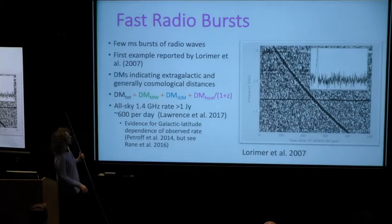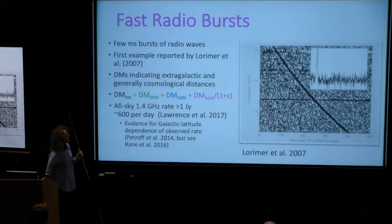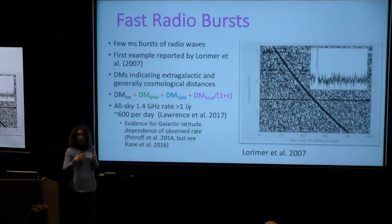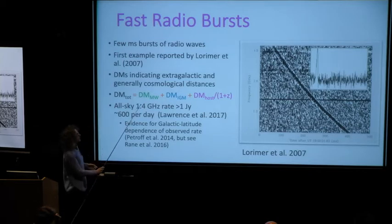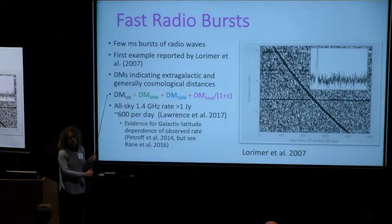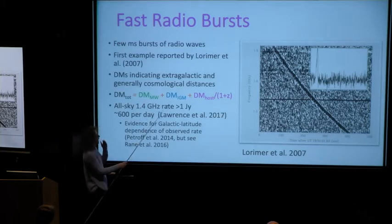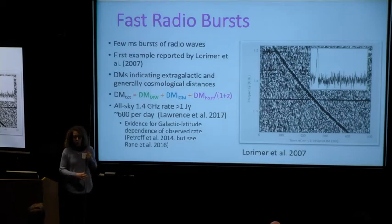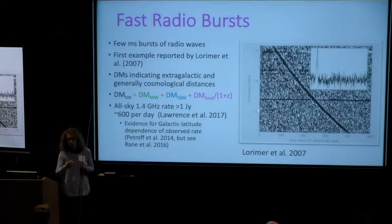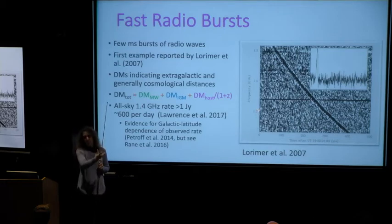Generally, the total dispersion measure seen in that one-over-frequency-squared sweep is the sum of three — or arguably four — components: one due to the intervening Milky Way galaxy, which defines FRBs in the sense that if your total exceeds that Milky Way term, it has to be extragalactic. Then there's a term from the intergalactic medium, and a term from the host galaxy, which could include its ISM or the immediate environment of the source.